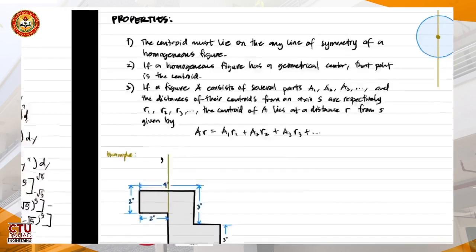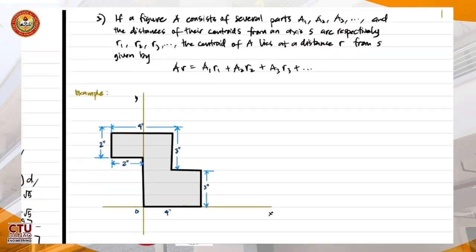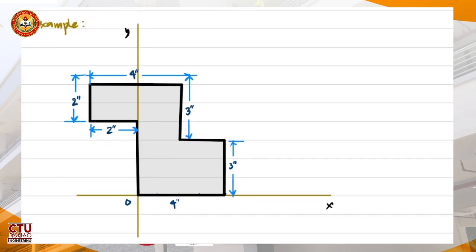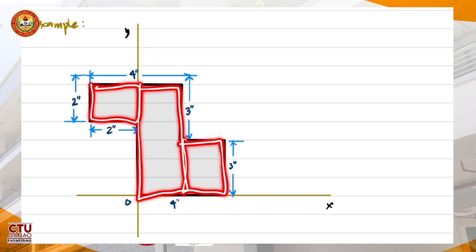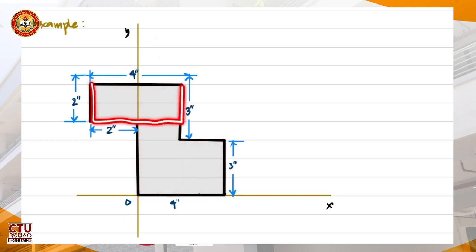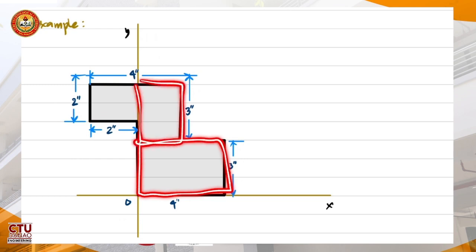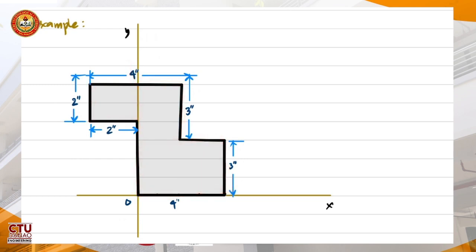We'll illustrate property three with this example. We need to locate the centroid of this plane figure. We notice this figure consists of several areas — we could divide it into three parts this way, or another way, or yet another way. There are several ways of dividing this into component areas.